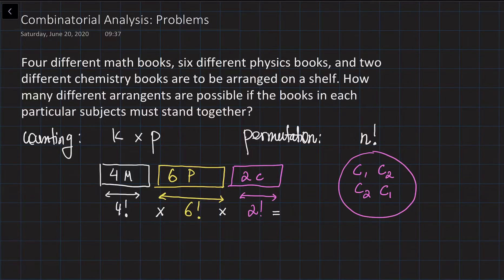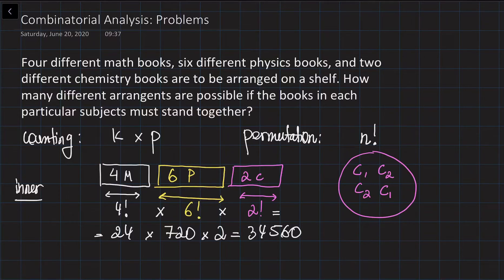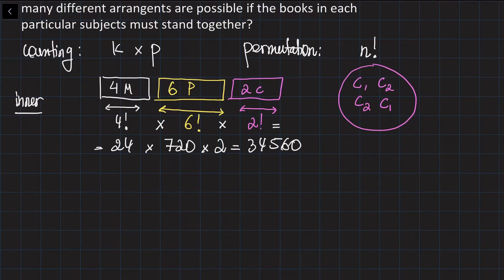Let's do the calculations: 4 factorial equals 24, 6 factorial equals 720, and 2 factorial equals 2. So multiplying these together gives us 34,560. This is the inner level — if the math books come first, then physics, then chemistry, you are going to have 34,560 different rearrangements.